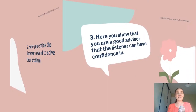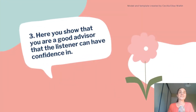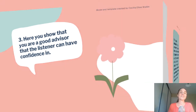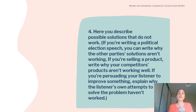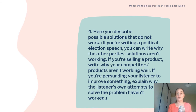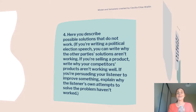Step number three: here you show that you are a really good advisor, that the listener can have confidence in you. Step number four: here you describe possible solutions that do not work. If you are writing a political election speech, you can write why the other party's solutions aren't working. If you are selling a product, write why your competitor's products aren't working well. If you are persuading your listener to improve something, explain why the listener's own attempts to solve the problem haven't worked.